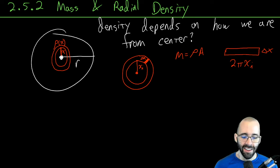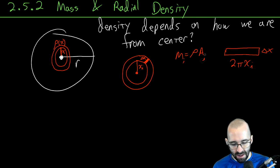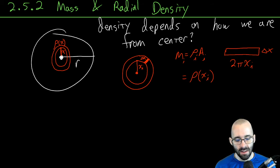The mass of the i-th piece is going to be whatever the density is at that little radius x_i times the area, which is 2π times x_i times delta x. That's our area of this little washer.